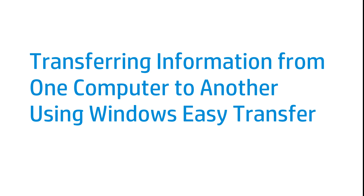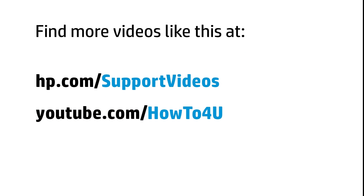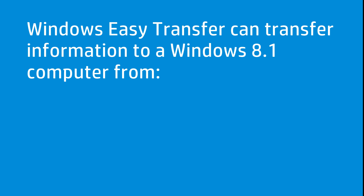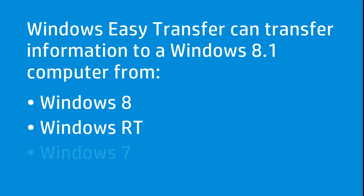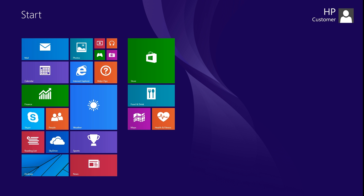This video shows how to use Windows Easy Transfer to transfer information from one computer to another. You can use Windows Easy Transfer to transfer information from computers with Windows 8, Windows RT, or Windows 7 to a computer with Windows 8.1. Windows Easy Transfer cannot transfer files from a Windows 8.1 computer to another computer. Use OneDrive or manually transfer files from a Windows 8.1 computer.